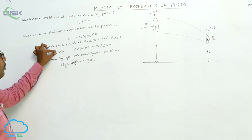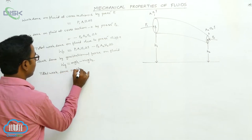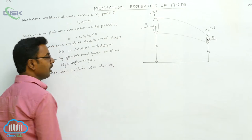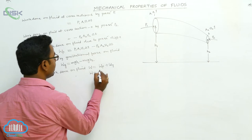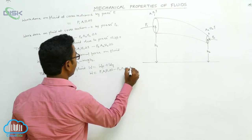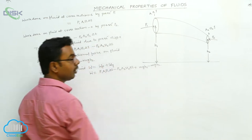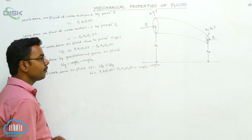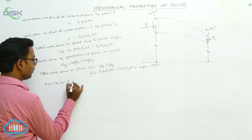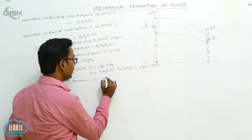The total work done on the fluid is W = Wp + Wg. So W = P1·A1·v1·Δt − P2·A2·v2·Δt + Mgh1 − Mgh2. According to the work-energy theorem, the total work done by external forces equals the change in kinetic energy.